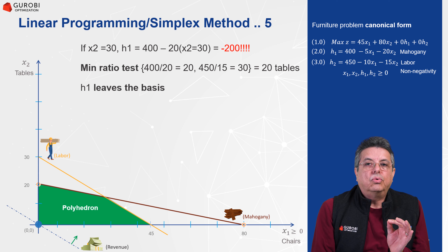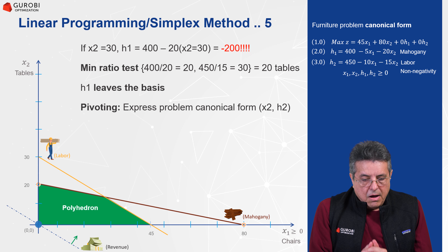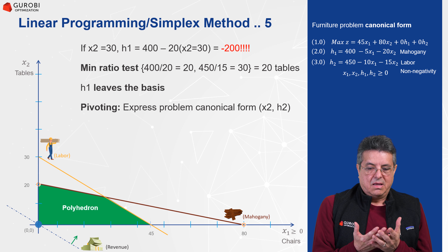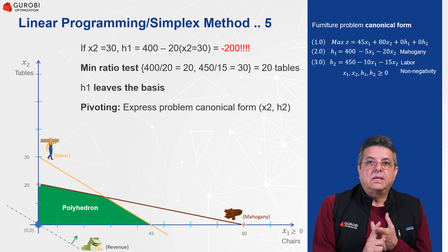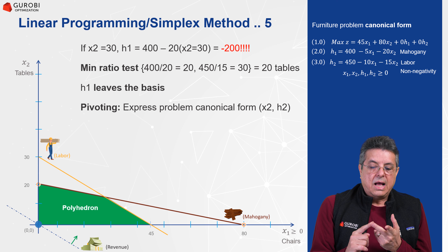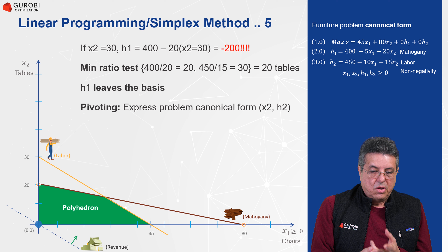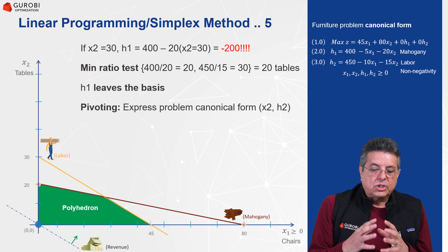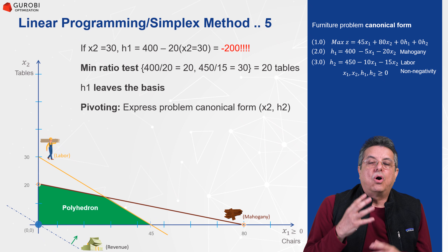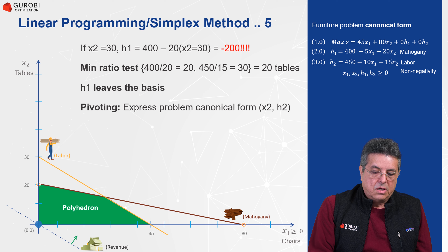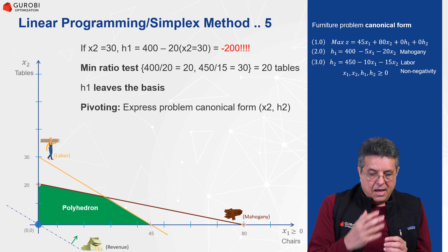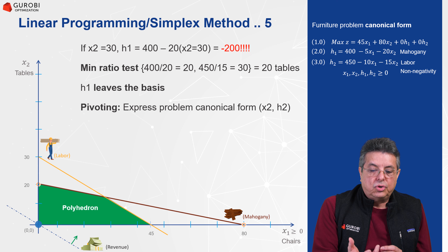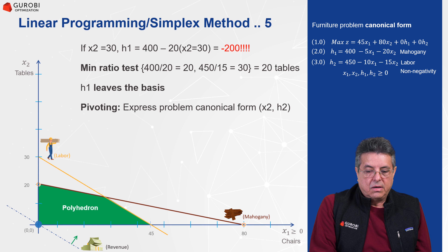We say the basic variable h1 is going to leave the basis, meaning it becomes zero. Now we have a new basis: the variables that are going to be positive are x2 and h2. We are going to express the problem in canonical form with respect to these new basic variables. This step in linear programming is called pivoting — we find a new basic solution in terms of x2 and h2.